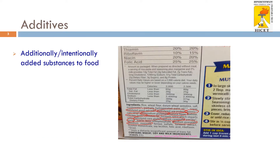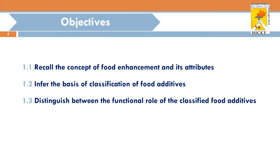So what is an additive? You can see on food packaging labeling the ingredients of food products. The ingredients used in food products and the additives are different. A food technologist must be able to differentiate between the food additives and the raw materials used in foods — these are additionally or intentionally added substances to the foods. The general objective of this lecture is to recall the concept of food enhancement and its attributes, infer the basis of classification of food additives, and to distinguish between the functional role of the classified food additives.